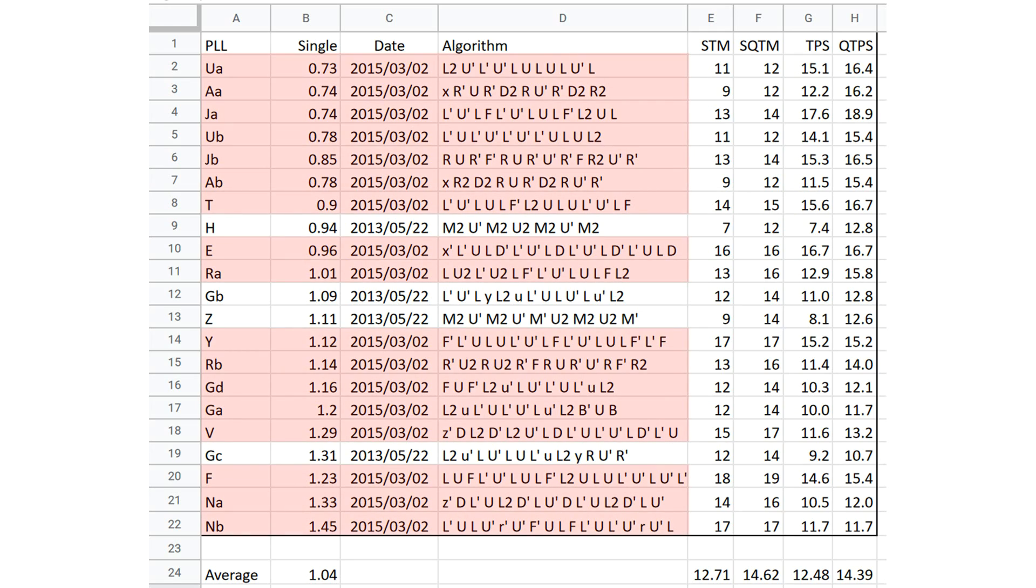And then in 2015, I went and improved on some of them. My average was sub-15 at the time, and as you can see, less than half of these PLL algorithms were sub-1 at best.